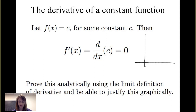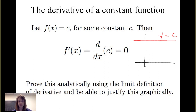A constant function has a graph of a horizontal line. Suppose this is the line y equals c. Since the derivative at a particular point is the slope of the tangent line, the tangent line in this case is that constant function, and the slope of that constant function is 0. So therefore, it makes sense that the derivative of a constant is 0.